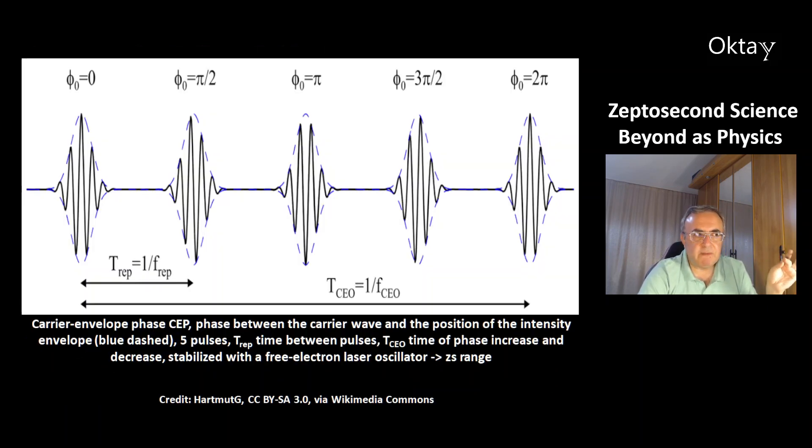This is a carrier envelope phase CEP. That's the phase between the carrier wave and the position of the intensity envelope. The intensity envelope is in blue, dashed. Carrier wave is in black. This is a picture of five pulses. TREP is the time between the pulses. TCO is the time of phase increase and decrease. Here we have maximum, and here we have maximum again. This is stabilized with a free electron laser oscillator. And that gets you to the zeptosecond time range.